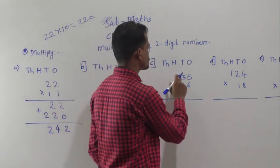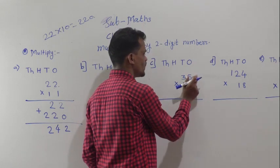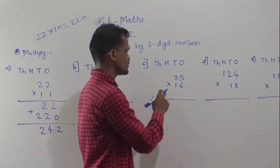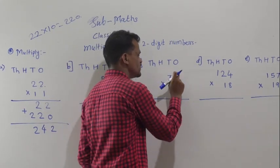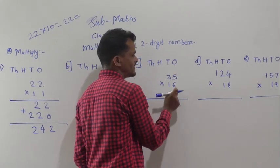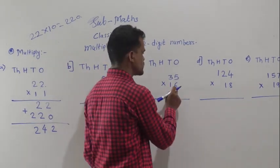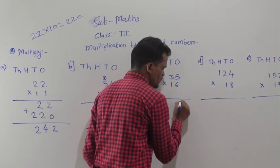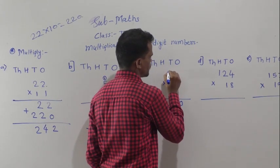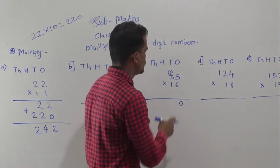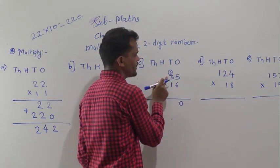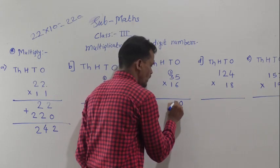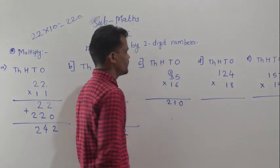Next example: 35 multiply by 16. First, multiply 35 by 6. 6 fives are 30 — wait, 6 fives are 13, so write 0 here and carry 3 forward. Now, 6 threes are 18, 18 plus 3 is 21.